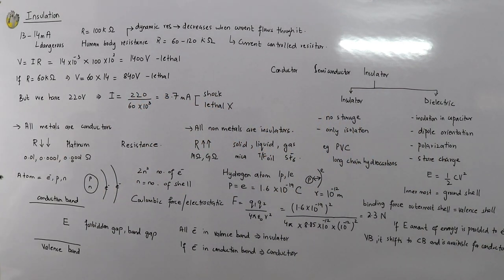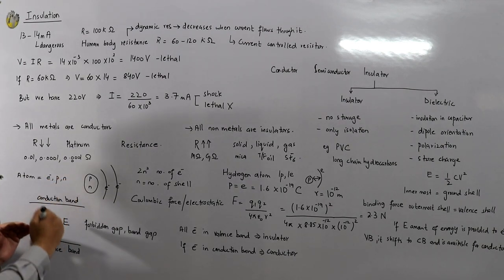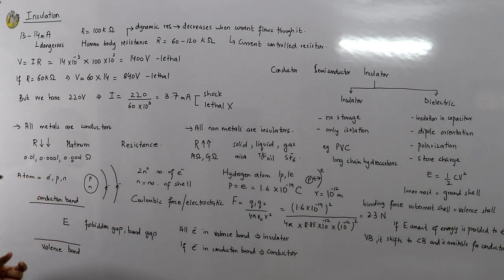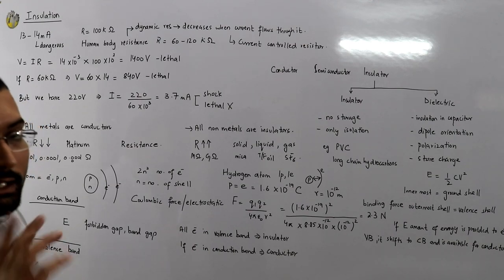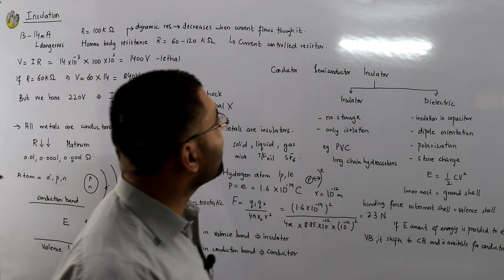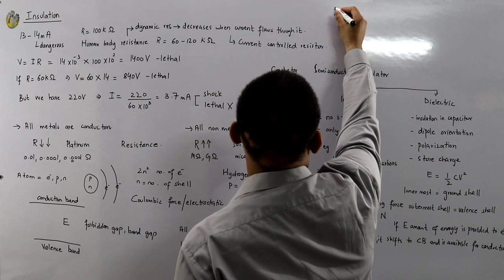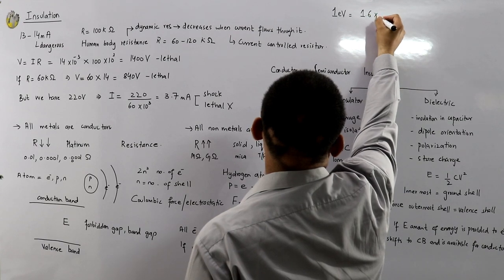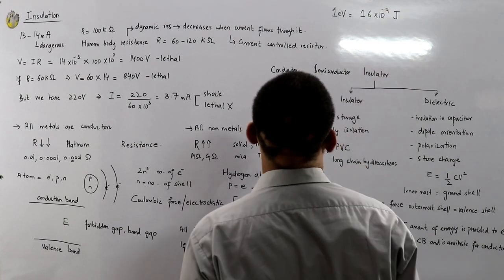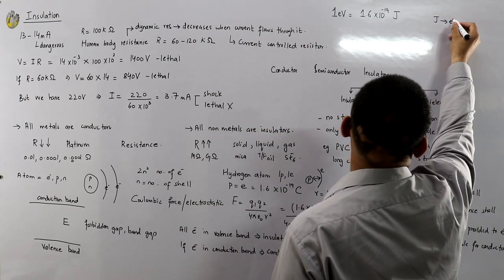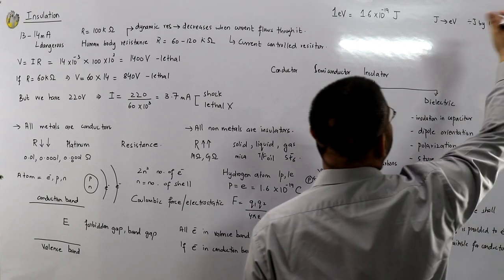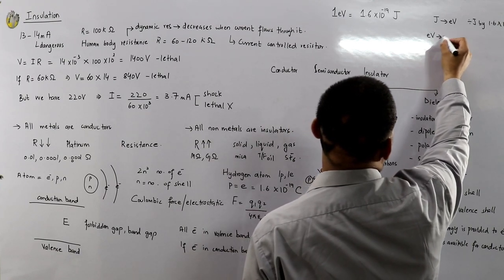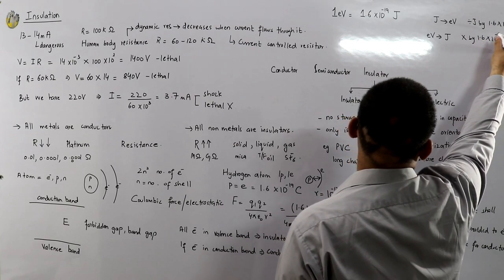This means the electron in the valence band was provided enough energy to surpass the energy gap and reach the conduction band, where it is available for conduction. That energy is measured in electron volts. The major unit of energy is joules, but in electrical terms we use electron volts. One electron volt equals 1.6 × 10⁻¹⁹ joules. To convert joules to electron volts, divide by 1.6 × 10⁻¹⁹; to convert electron volts to joules, multiply by 1.6 × 10⁻¹⁹.